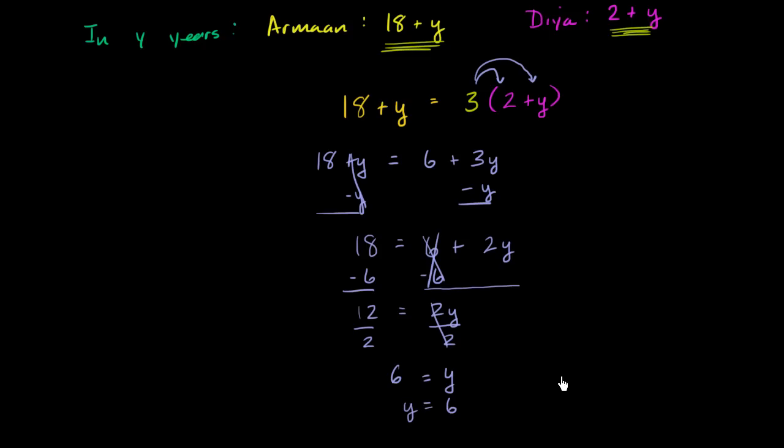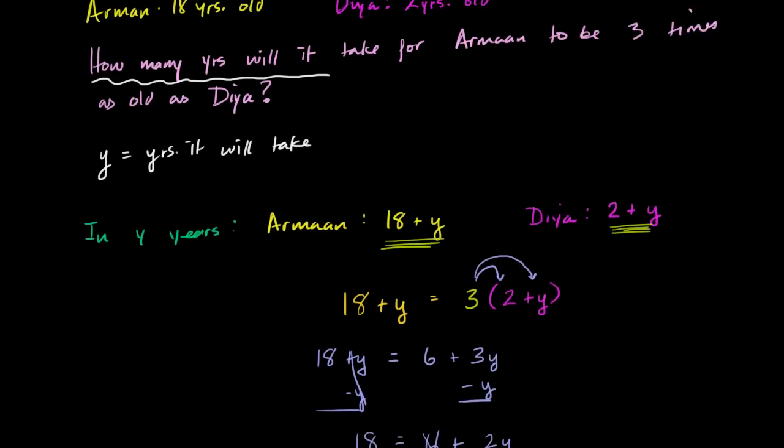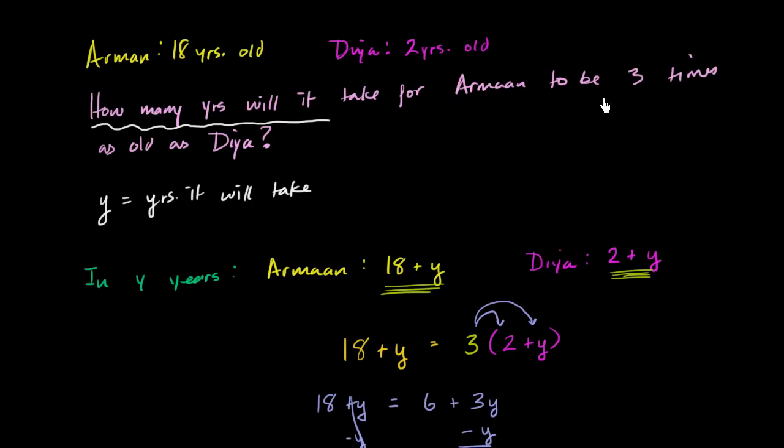Or y is equal to six. So going back to the question, how many years will it take for Armand to be three times as old as Dia? Well, it's going to take six years.